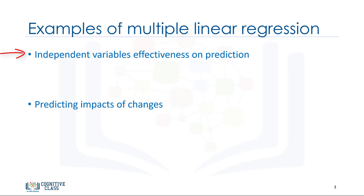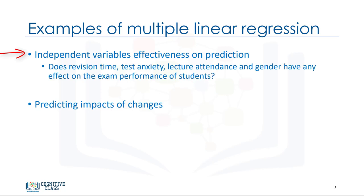First, it can be used when we would like to identify the strength of the effect that the independent variables have on a dependent variable. For example, does revision time, test anxiety, lecture attendance, and gender have any effect on exam performance of students?